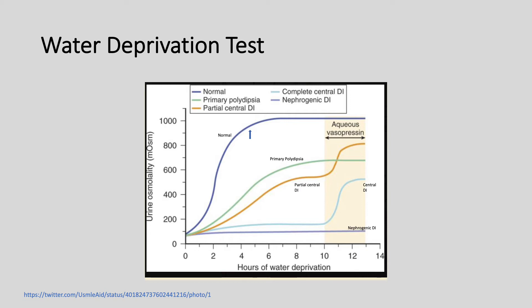The rise in central DI won't reach the normal level, but you could go from a urine osmolality of about 100 up to 400–500. What remains to be differentiated is partial central diabetes insipidus from primary polydipsia. With partial central DI, urine osmolality starts to rise with water deprivation but doesn't reach the normal level — maybe 400–500 — and when you give aqueous vasopressin, it rises further but still not to the normal range. With primary polydipsia, urine osmolality rises, and when you give aqueous vasopressin, nothing happens.